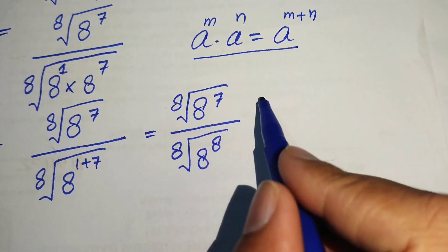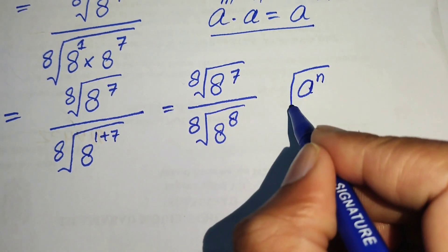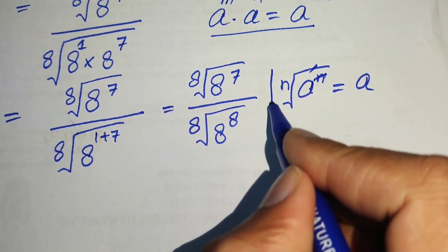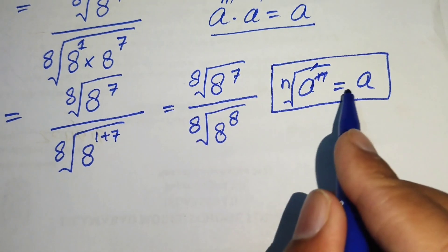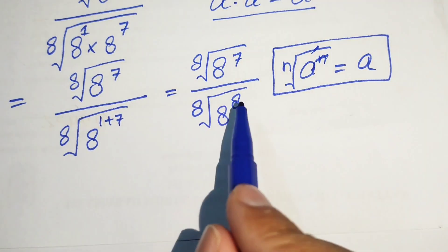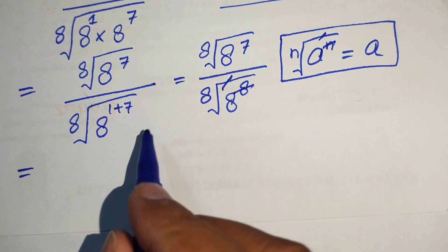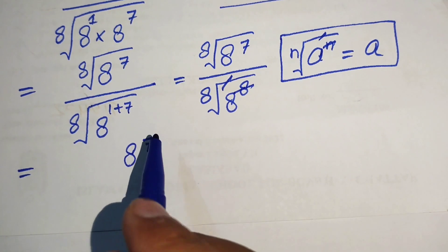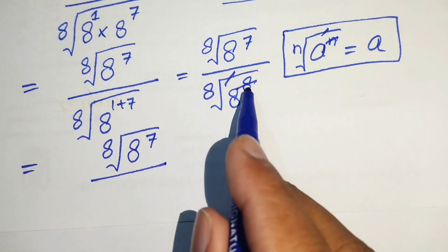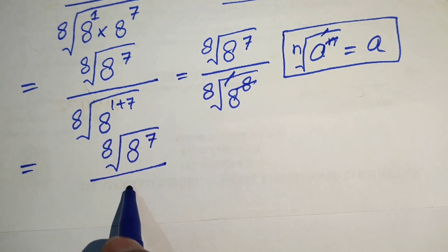We apply another radical-exponential law: a to the power of n under the nth root equals a, meaning the exponent n and the nth root cancel each other. So the 8th power and the 8th root in the denominator cancel, giving us the 8th root of 8 to the power of 7 in the numerator divided by simply 8.